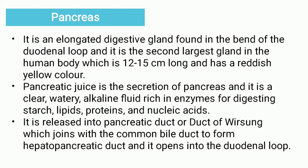The pancreas is an elongated digestive gland found in the bend of the duodenum loop. It is the second largest gland in the human body, measuring 12–15 cm in length and having a reddish-brown color. The pancreatic juice is the secretion of the pancreas — a clear, watery, alkaline fluid rich in enzymes for digesting starch, lipids, proteins, and nucleic acids. It is released into the pancreatic duct, which joins the common bile duct to form the hepatopancreatic duct, opening into the duodenal lobe.